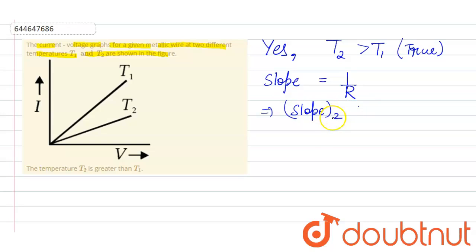So this implies that the resistance of T1 is less than the resistance of T2. And we know the resistance is directly proportional to temperature for metallic wire.